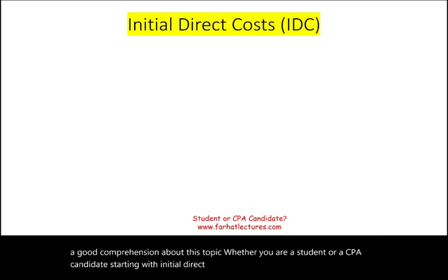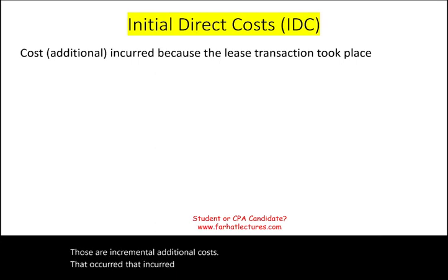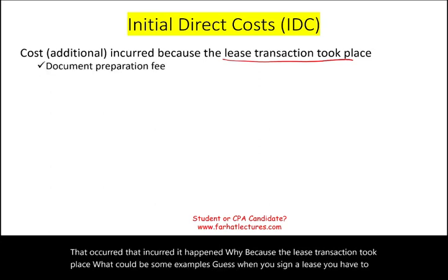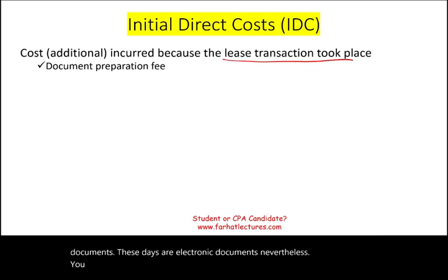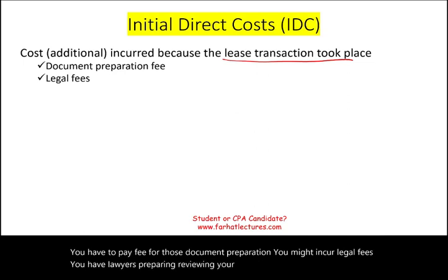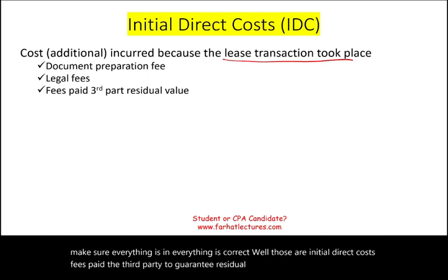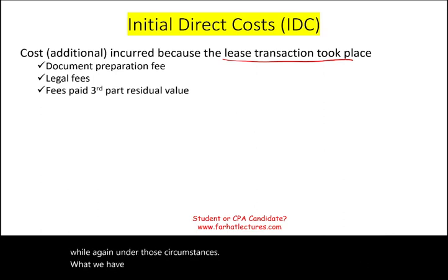Starting with initial direct costs — what are those? They are incremental, additional costs that are incurred because the lease transaction took place. Some examples: when you sign a lease, you have to prepare documents, and you pay a fee for that document preparation. You might also incur legal fees — lawyers preparing and reviewing your lease paperwork. Those are initial direct costs. Fees paid to a third party to guarantee residual value also qualify, such as when a third-party guarantee makes a lease a direct financing lease.